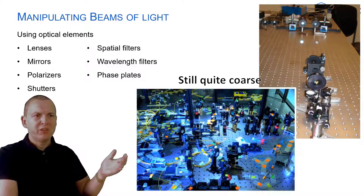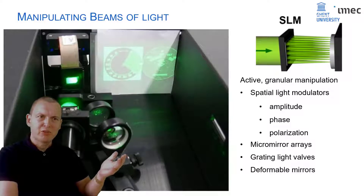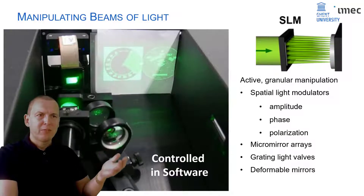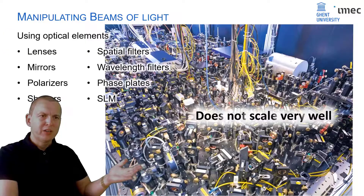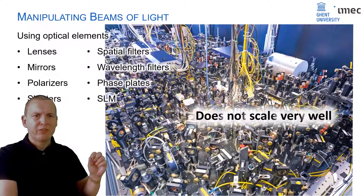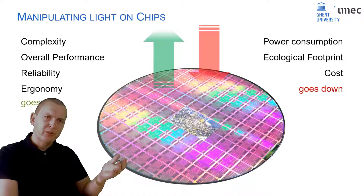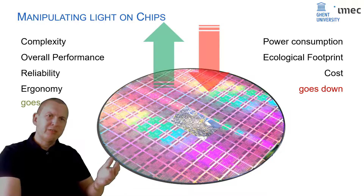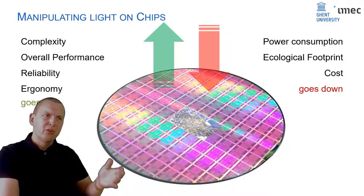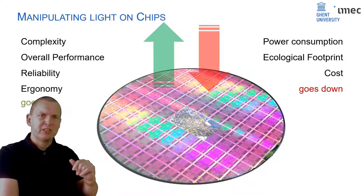To manipulate beams of light, we usually resort to discrete elements like lenses, mirrors, filters, etc. Some of these discrete elements can even be programmable — for instance, a spatial light modulator like in a digital projector. But if you want to scale up the control of these elements, even in software, you need a really massive installation, and this doesn't scale very well. The trick here is to bring everything to the surface of a chip, just like you do in electronics.